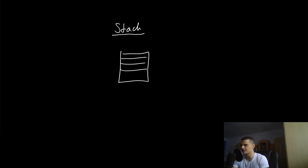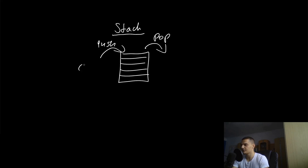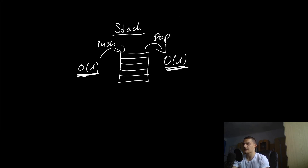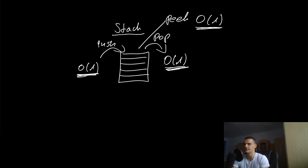When it comes to runtime complexity, the stack is pretty simple. The two main operations are push and pop, and both run in constant time O(1). Pushing just places an element at the current active position, and popping removes the active element and shifts the pointer. The peek operation is also O(1) — you just look at the top element without removing it.